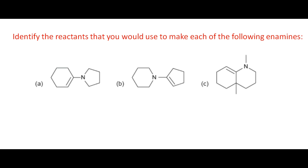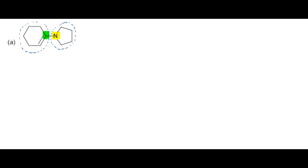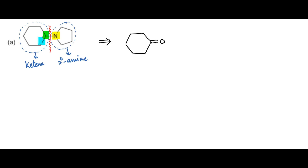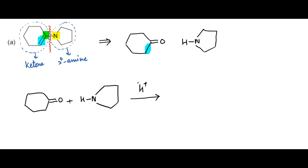Now let us identify the reactants used to make these enamines. First identify the nitrogen and carbon bonded to each other. In the first case, this part comes from ketone and this part from secondary amine. To find the reactants, break the C-N bond, remove the C-C double bond and restore the C=O double bond — this gives cyclohexanone. Restoring hydrogen on nitrogen gives pyrrolidine. Thus cyclohexanone and pyrrolidine in the presence of acid form this enamine.